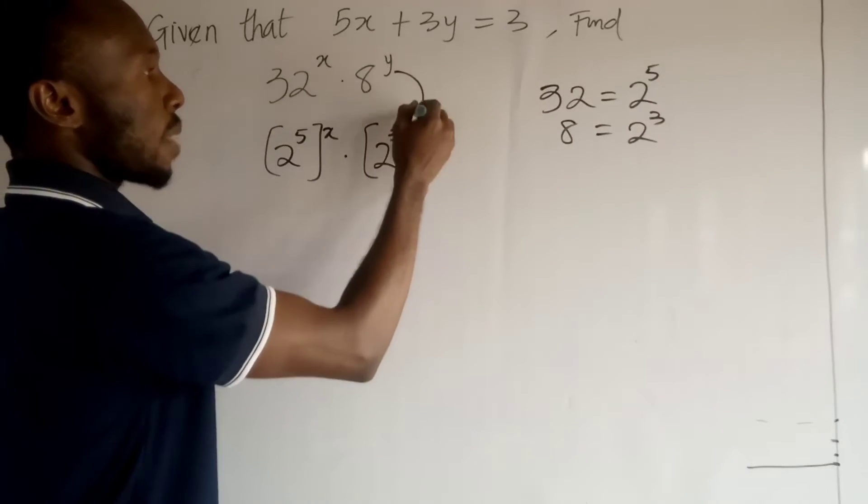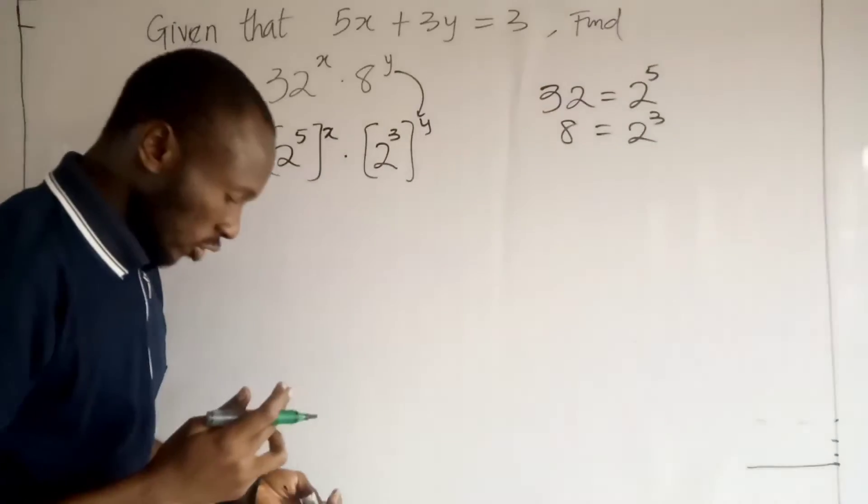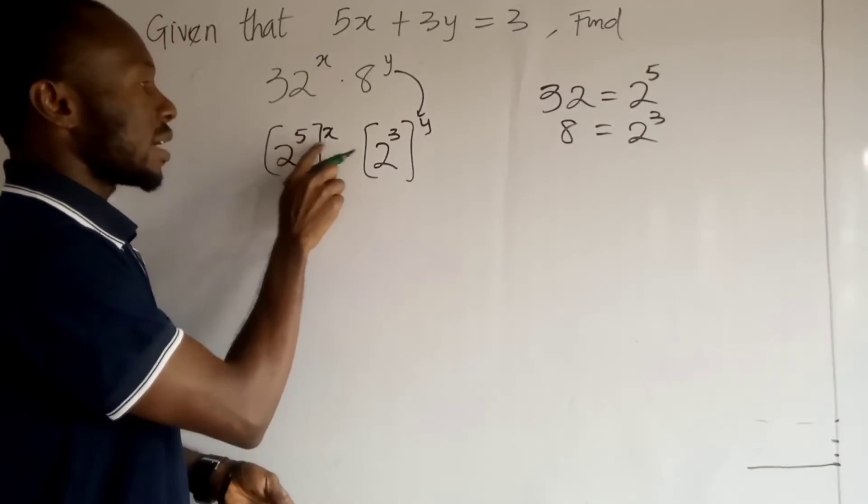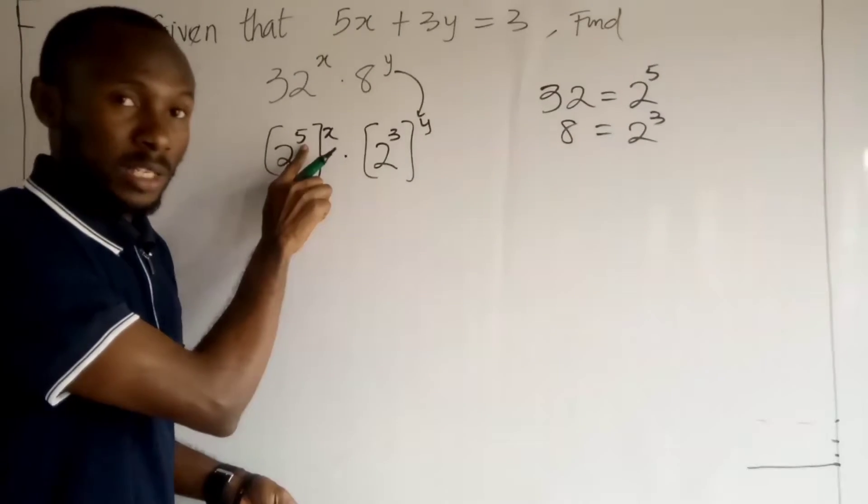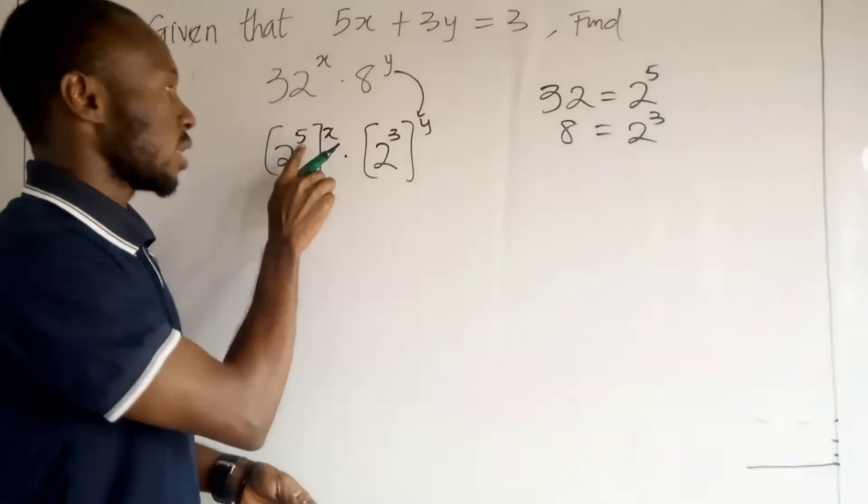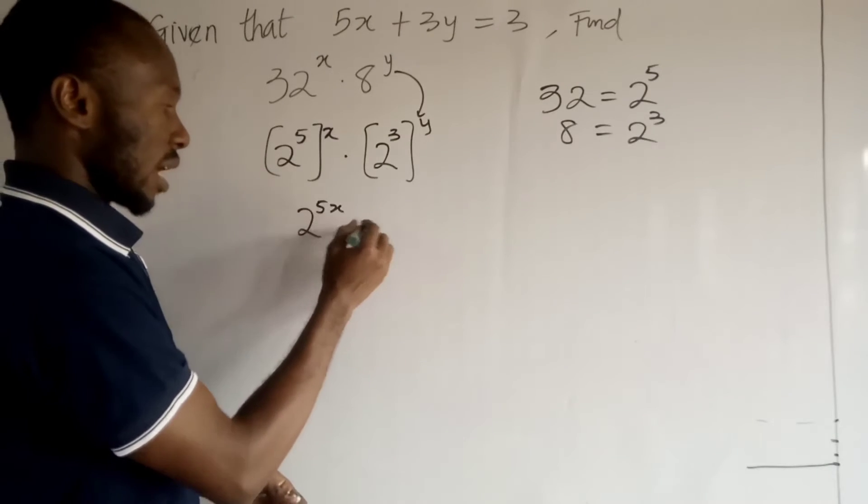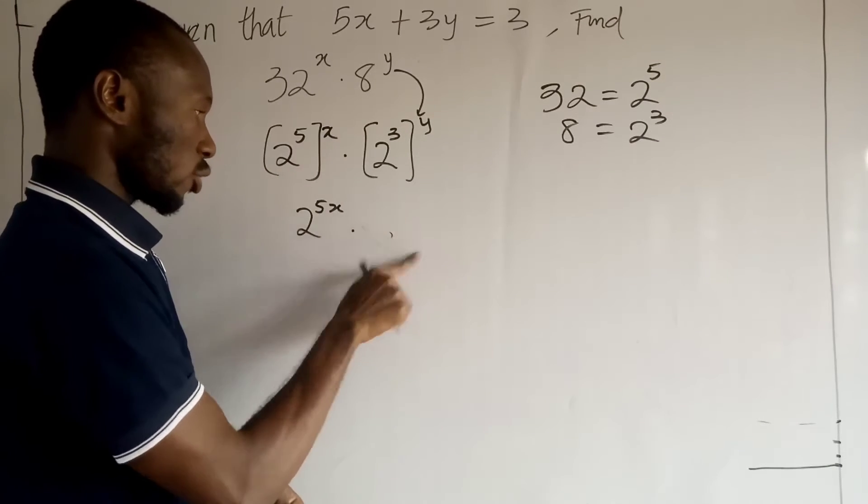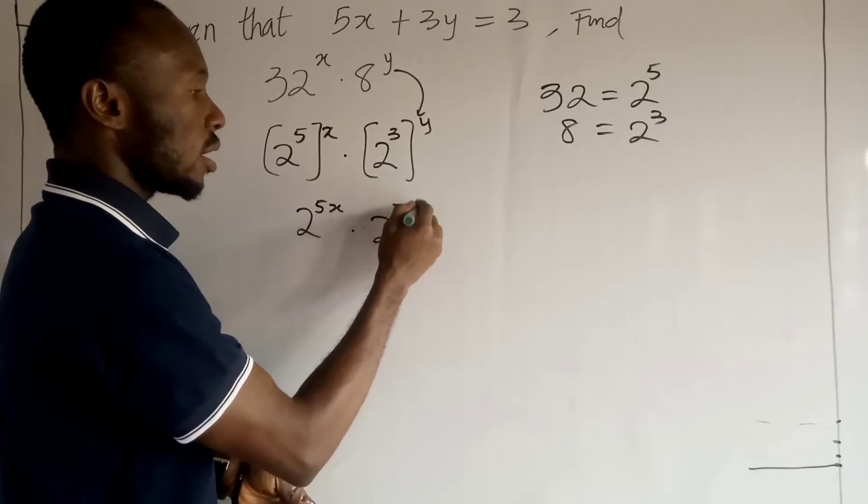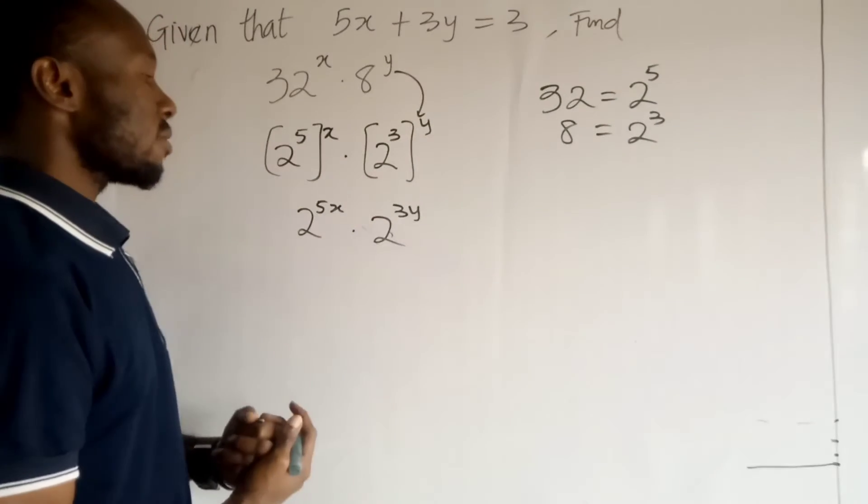Now, from this point, you can see that this guy and this guy, these are product exponents or product index. So, they'll multiply out to become 2 to the power 5x times 2 to the power 3y. Very good.